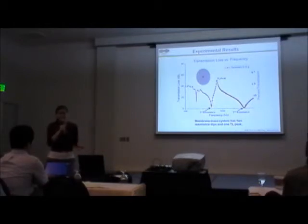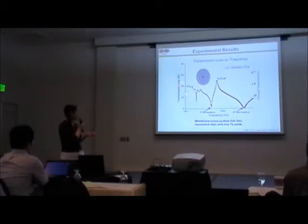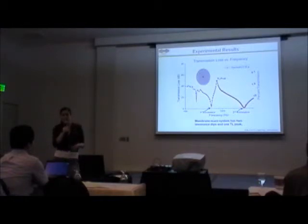Just for a little bit of reference, 40 decibels of transmission loss corresponds to 1% of the amount of sound pressure transmitted across the structure. So that's actually a really good response.